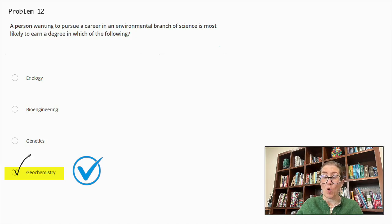Why are the other ones incorrect? Enology is the study of wines and wine making. Bioengineering applies engineering principles to biology and medicine which can include environmental applications but it is broader and not specifically focused on environmental science. Genetics is the study of genes and heredity which is more focused on biological and medical applications rather than environmental sciences. Geochemistry is indeed the correct answer here.